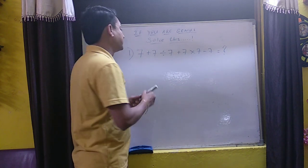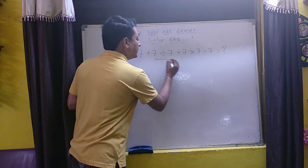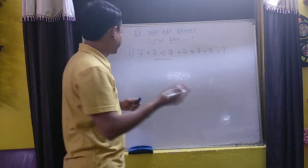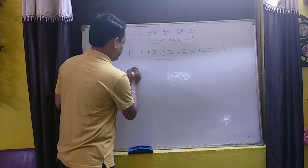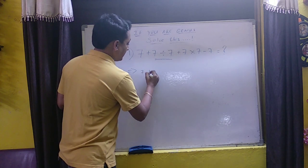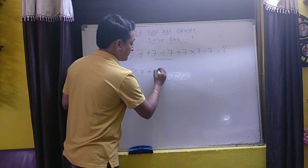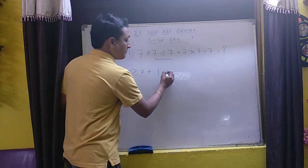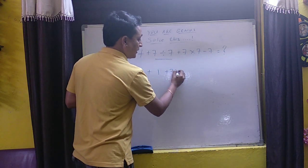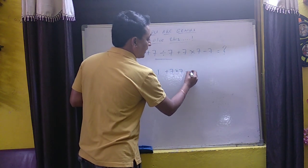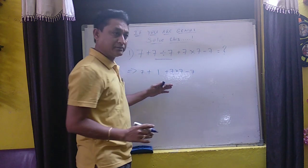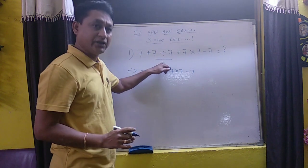First, let us go with the division part. So we have a division part here. So let us take it this way. 7 plus 7 divided by 7 is 1 plus 7 into 7 minus 7. This we have solved for the division first.